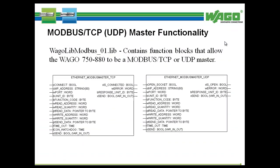The WAGO library files include pre-written programs, functions, and function blocks, as well as data types and visualizations. As previously mentioned, we will be implementing the Modbus master UDP function block.